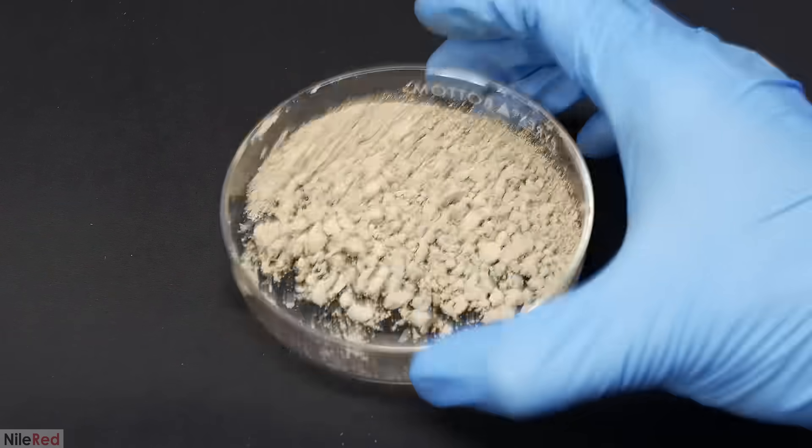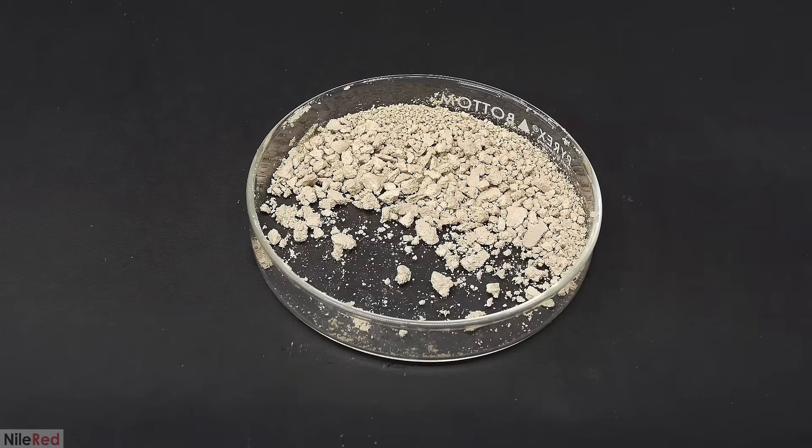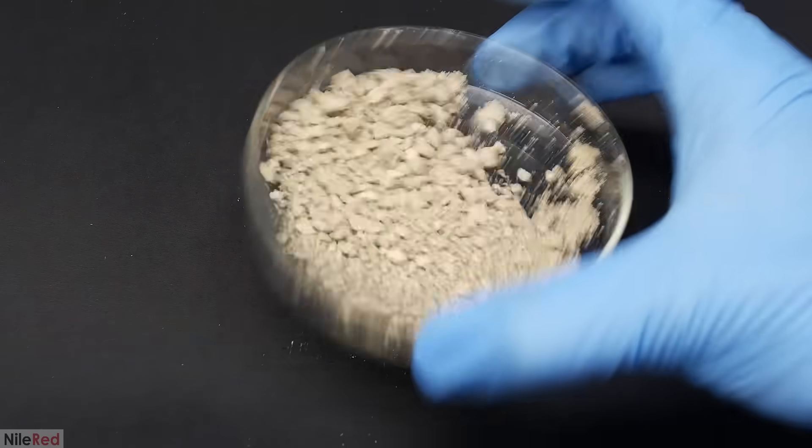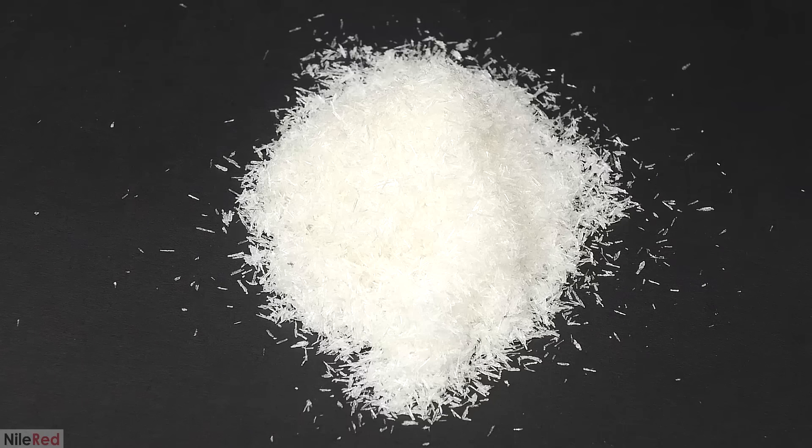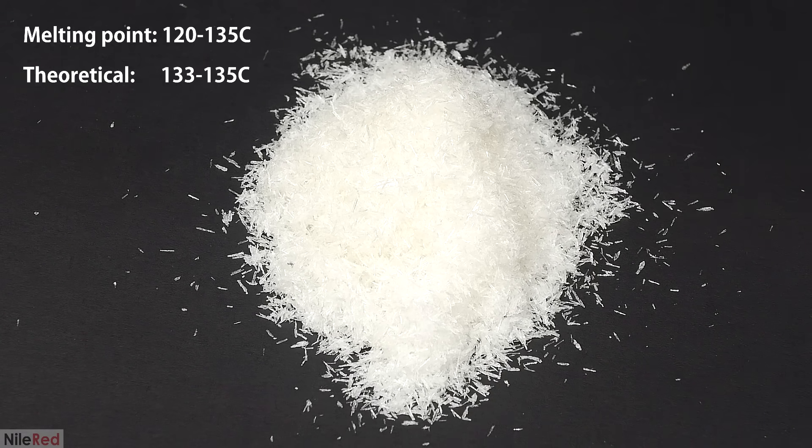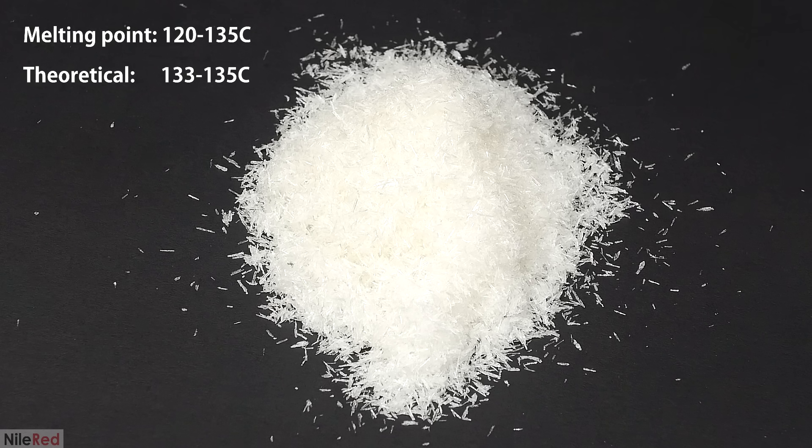I have no idea what I can actually use it for though, so if you guys have any ideas, I'd love to hear them in the comments. Anyway, one final thing that I did was test the purity of the urea. To do this, I measured its melting point, and I got a range of 120 to 135°C.